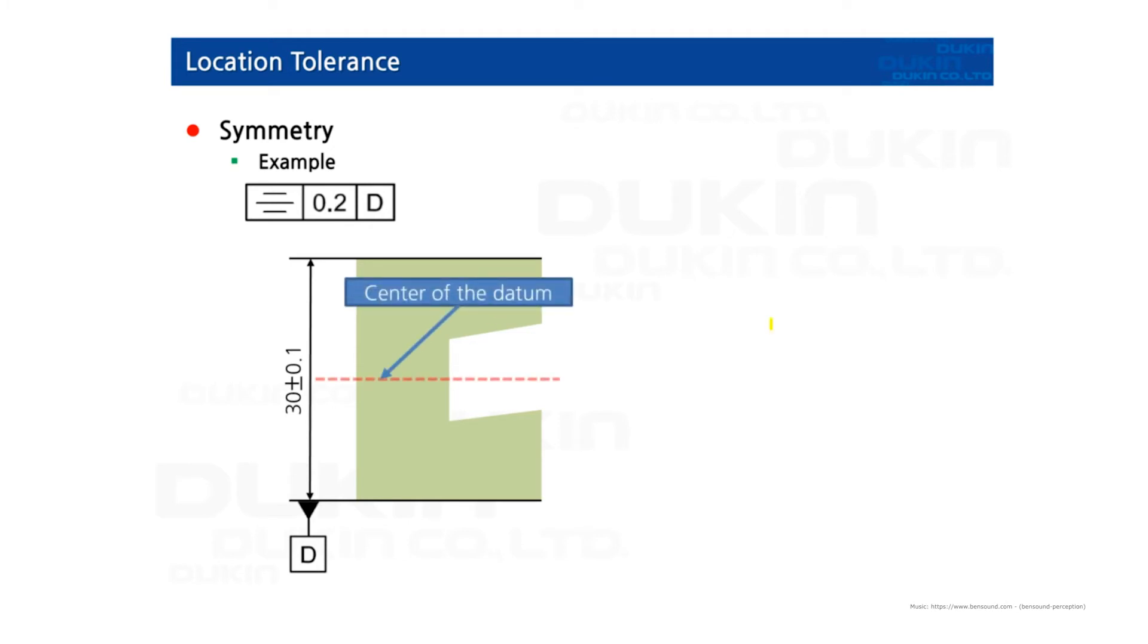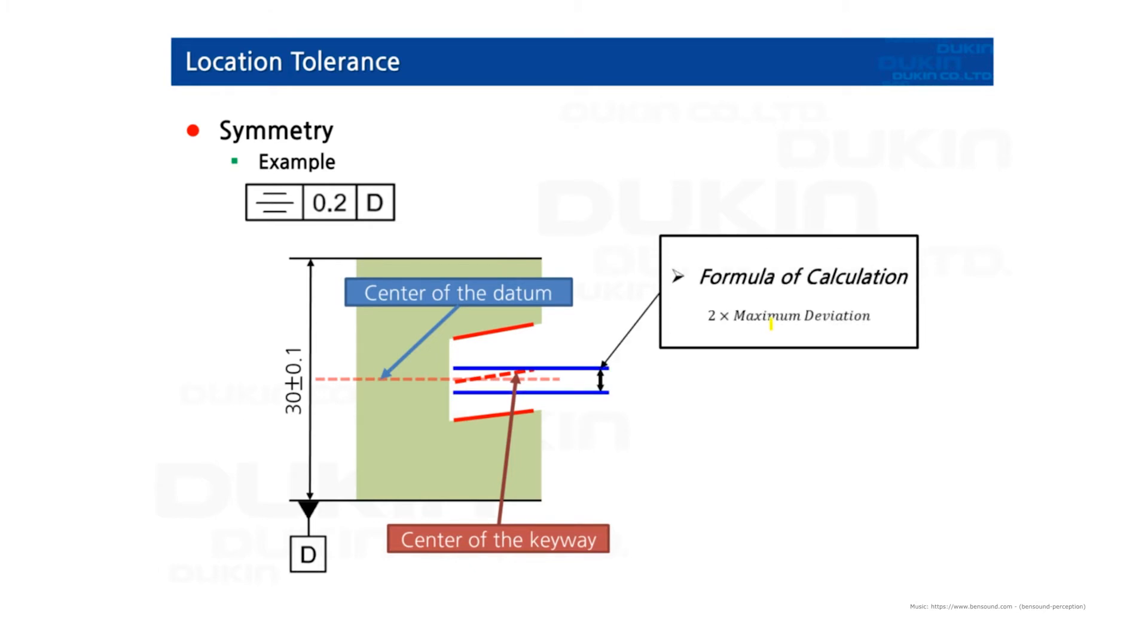So that's the central plane right there, datum D. And then the keyway we measure, and by the median points we can get the center of the keyway. And the formula of the calculation of symmetry is X maximum deviation. And geometric tolerances represent the worst condition as the measured values.